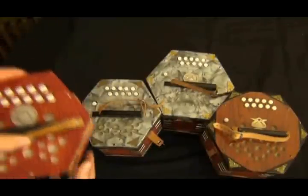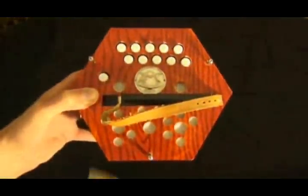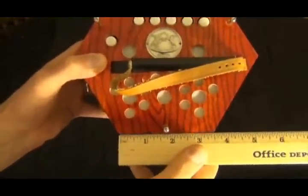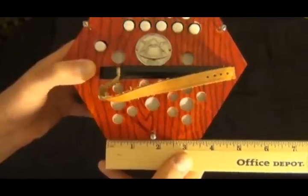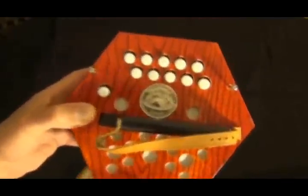Now let's take a look at this one, the smallest of the three. Each side is 3.5 inches, which is about 8.89 centimeters.